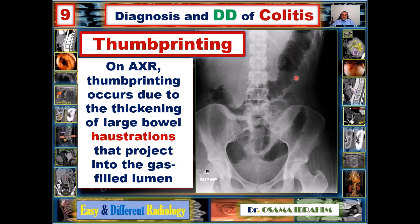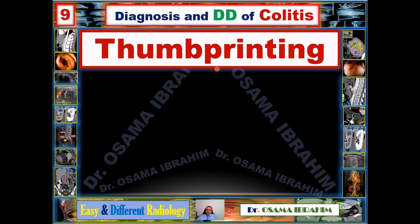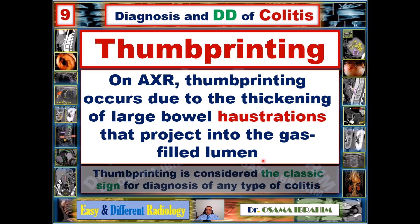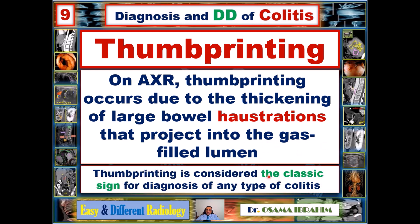When the thumb printing sign is recognized on abdominal X-ray, it indicates colitis. To recap: thumb printing on abdominal X-ray occurs due to thickening of the large bowel haustra projecting into the gas-filled lumen. Thumb printing is considered the classic sign for the diagnosis of any type of colitis, as will be covered in the differential diagnosis.